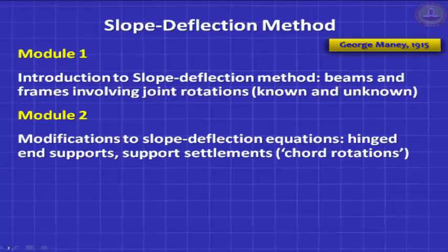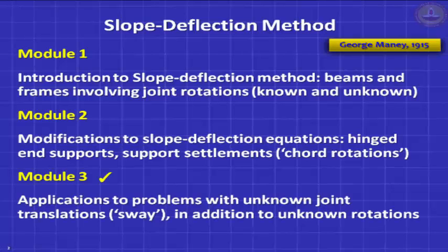What happens when the chord rotations are not known? That is what we will explore in today's session, module 3, where we have unknown joint translations. These degrees of freedom are referred to as sway degrees of freedom. And of course, in addition to the translation unknowns, you also have unknown rotations.